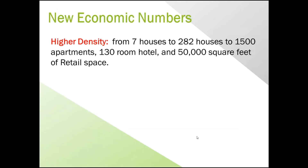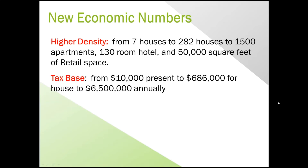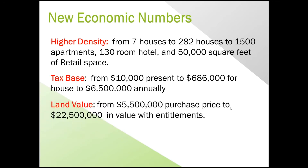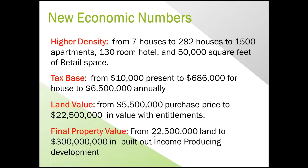Now the economic numbers — this is where it really gets good. We started out with 55 acres and added seven houses, so we've got 60 acres. That could go to 282 houses, but instead it goes to 1,500 apartments, a 130-room hotel, and 50,000 square feet of retail. The tax base goes from $10,000 to about $8 million annually. We paid $5.5 million for the land, and the value with the entitlements is now worth about $22 million. The final property value goes from the land value to over $300 million when fully built out.